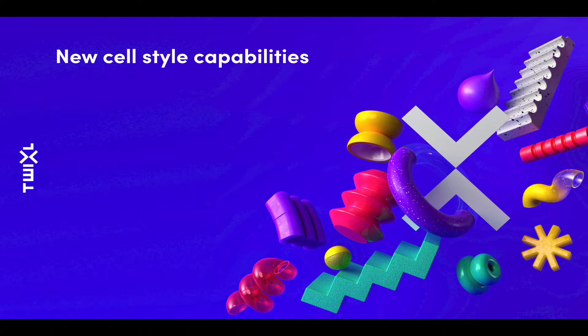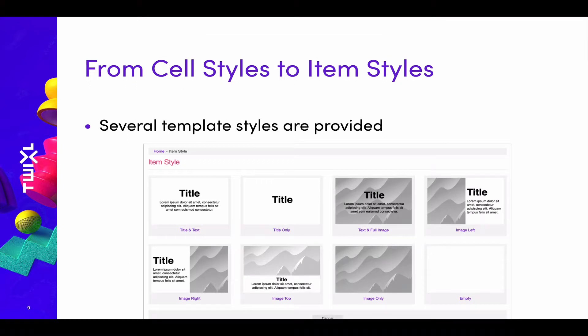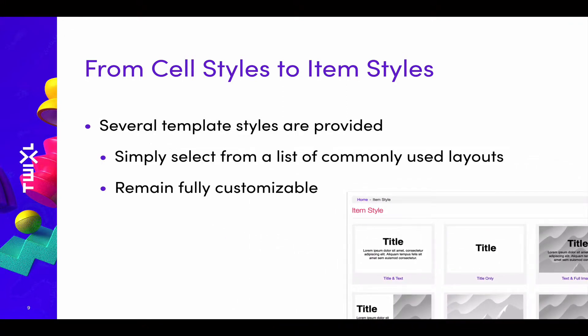Let's look at the new cell style capabilities. We decided to rename cell styles to item styles because you are defining a lot more than just the style of the cell itself — also all the content displayed within that cell. We now provide several template styles that you can start from, such as a title with text, just a title, a title and text with a background image, an image on the left with text on the right, or the reverse. These templates are fully customizable according to your needs.